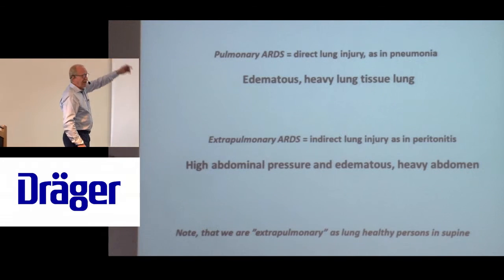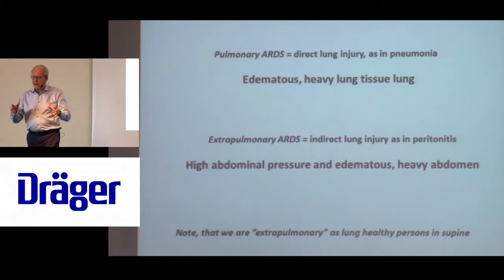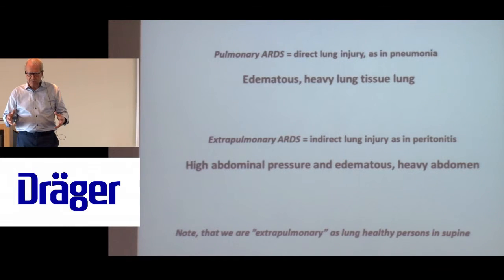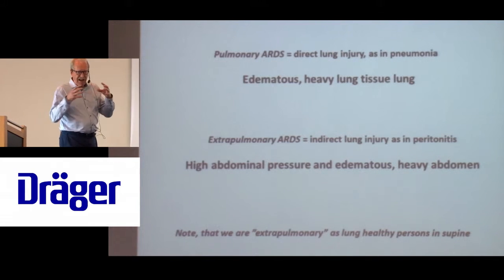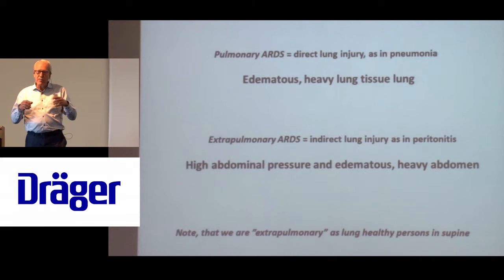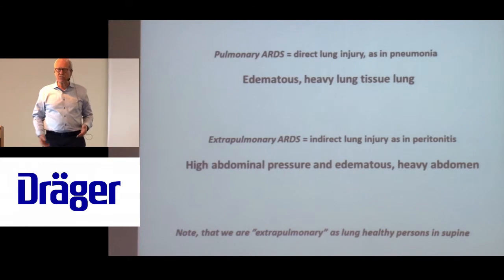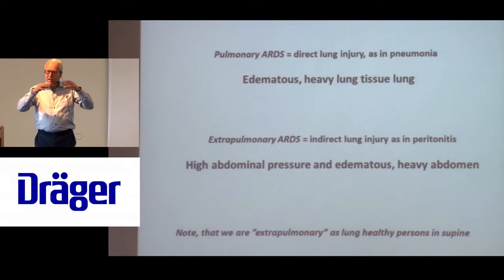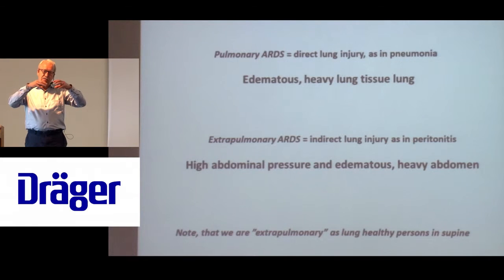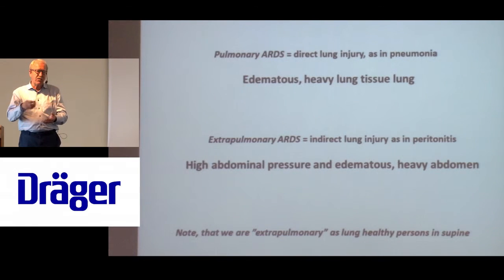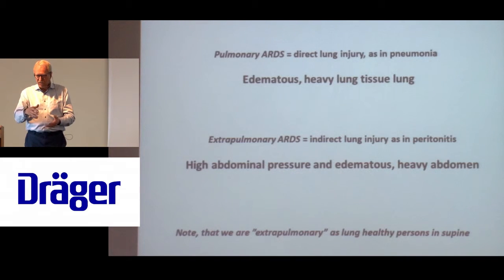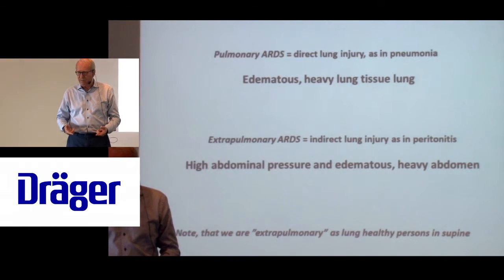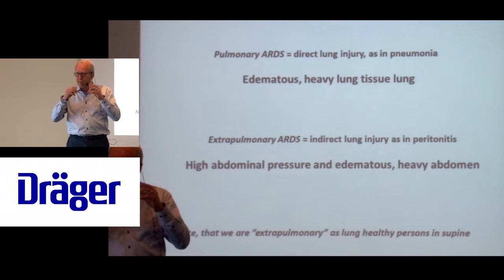In pulmonary ARDS, like pneumonia, you have a very wet lung. The weight of a lung with ARDS is about 2 to 3 kilos, and the FRC - the lung volume at end expiration while supine - may be down to only 500 milliliters instead of 2,500 milliliters. So it is a baby lung, but it is a pulmonary baby lung. The rest of the lung volume is fluid - it's like you have a balloon filled two thirds with water. If you increase PEEP, you cannot get rid of that fluid; you can only overinflate the top part of the lung.